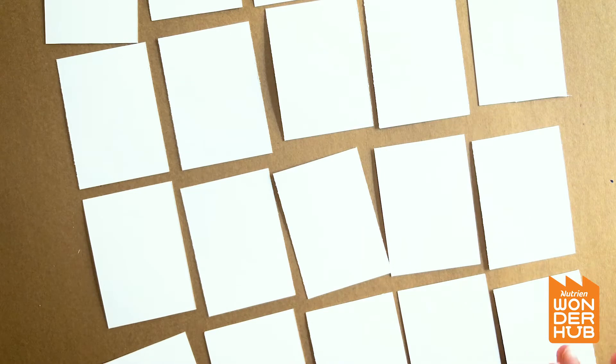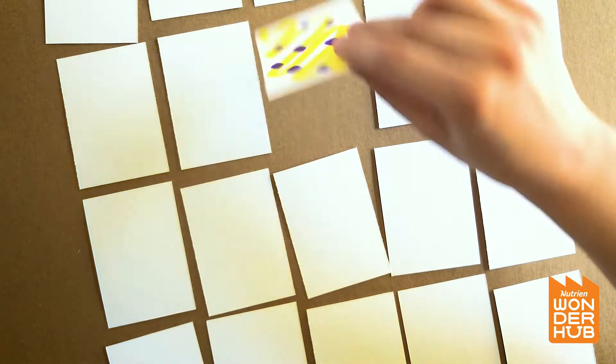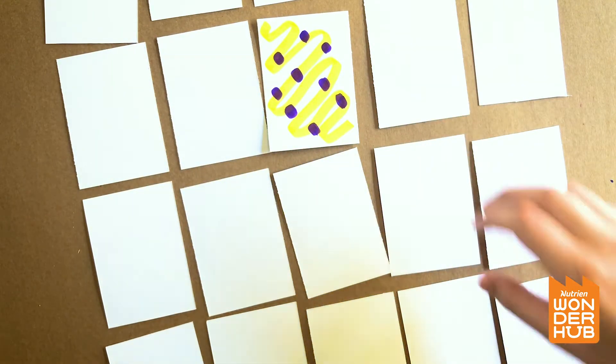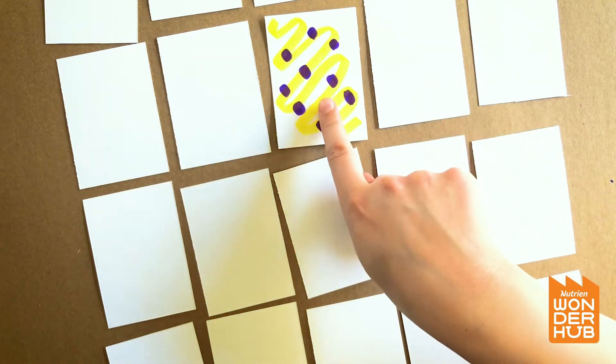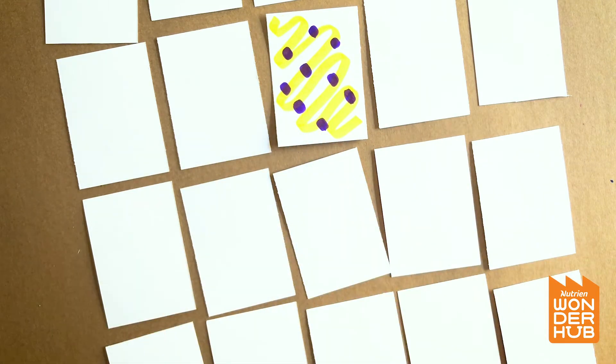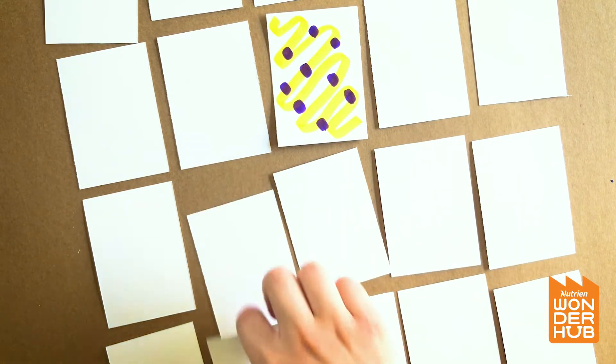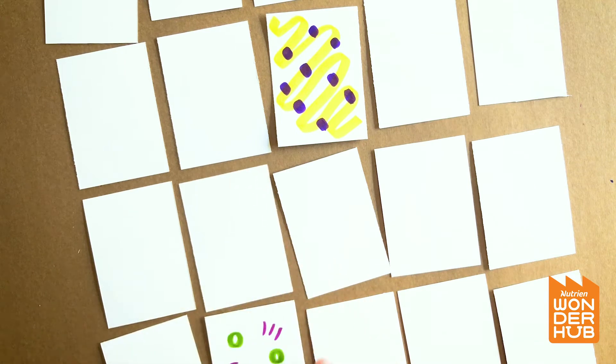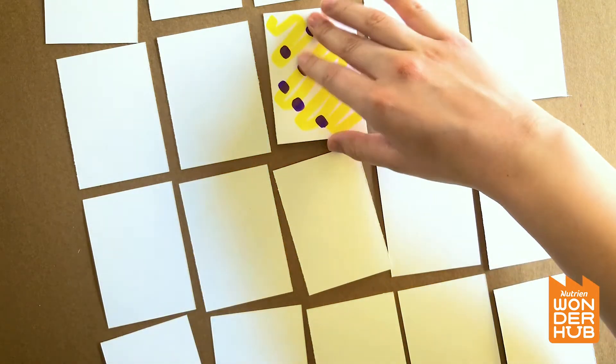So once you have them all laid out, you can have your siblings or your parents or someone play with you and all you do is take turns flipping over a card, trying to find its pair. So I want to find the yellow swirl with the purple polka dots. Is it that one? No. So I'm going to try my best to remember where I flipped these ones over. We're going to flip them back around.